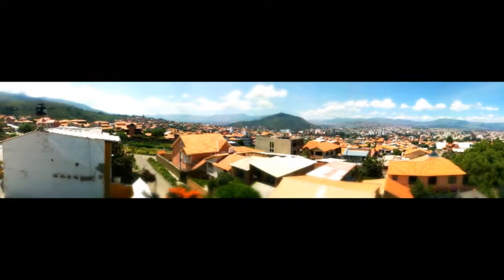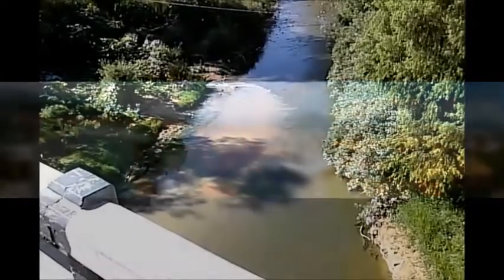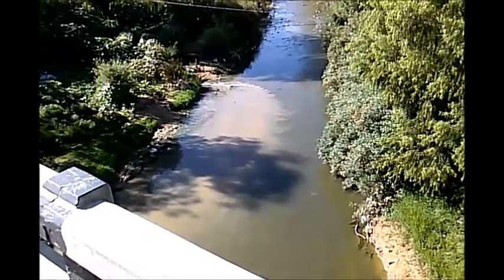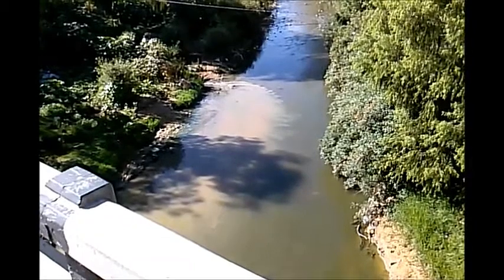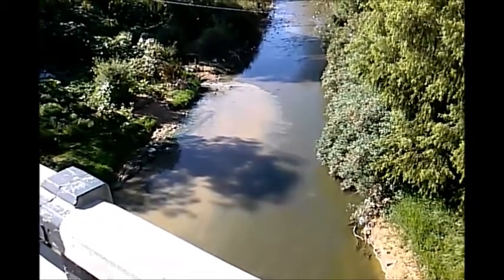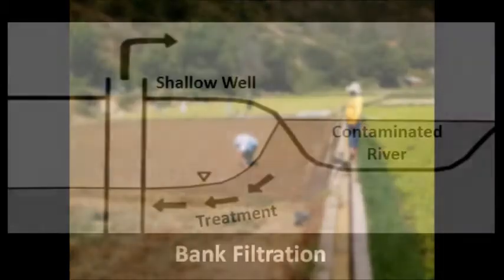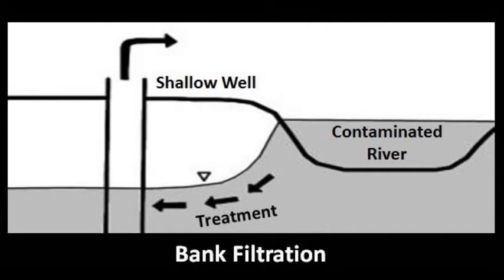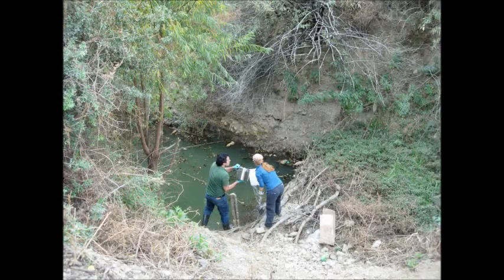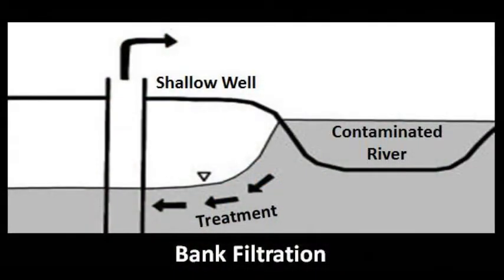In the water-scarce Cochabamba Valley of Bolivia, many of the rivers are contaminated with untreated wastewater. Urban growth has increased rapidly over the past few decades, and in many neighborhoods, sewer collection systems have been installed without treatment, many of them discharging directly into the rivers. Some farmers downstream have been irrigating with river water for generations, but as water quality started to decrease, many of them implemented bank filtration systems to improve the quality of their irrigation water. These systems consist of shallow extraction wells located some distance from the river, which allow water to pass underground through the riverbanks.